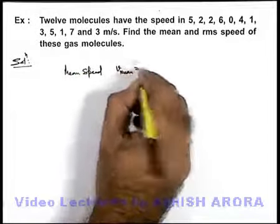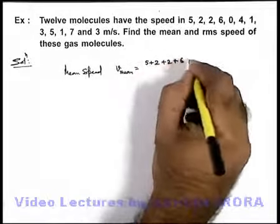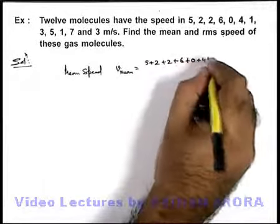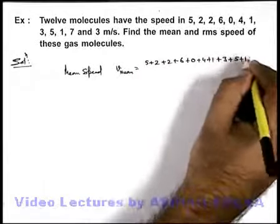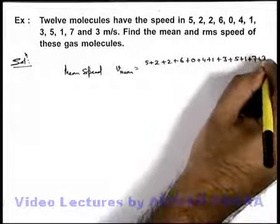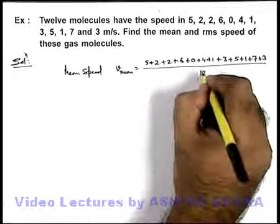Just by taking the average of these values, it'll be 5 + 2 + 2 + 6 + 0 + 4 + 1 + 3 + 5 + 1 + 7 + 3, divided by 12 as there are a total of twelve molecules.